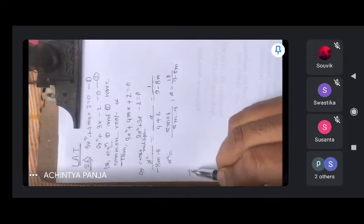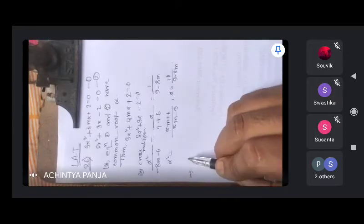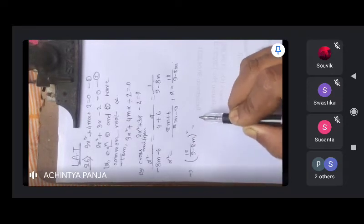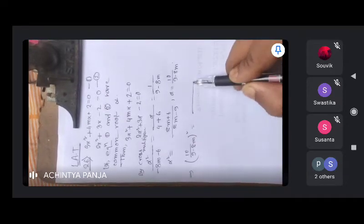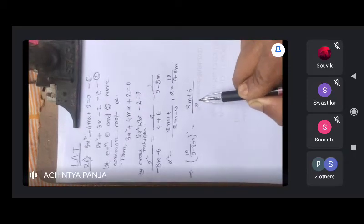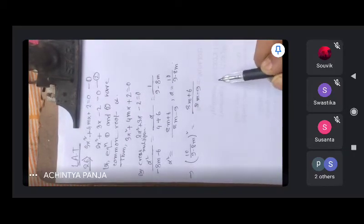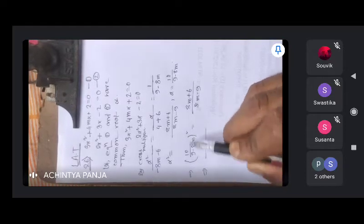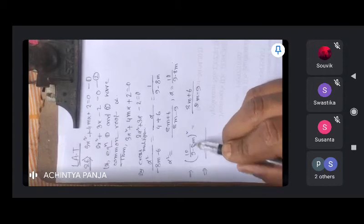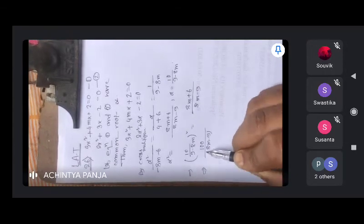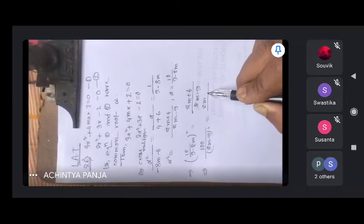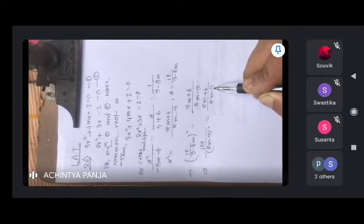The alpha value is 10 by 9 minus 8m, and 10m plus 6 by 8m minus 9. Now 8m plus 6 by 8m minus 9.